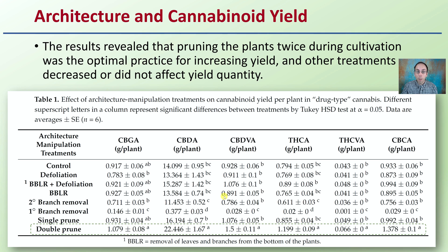There is some variability — we are talking about a living organism. Some had very close similarities labeled as A, the highest value, with subsequent letters indicating significant differences from a statistical standpoint using a Tukey's HSD test. The take-home message: the double prune method clearly improved all of these particular cannabinoids. You can go back to the original article to look at more details of that particular pruning method.